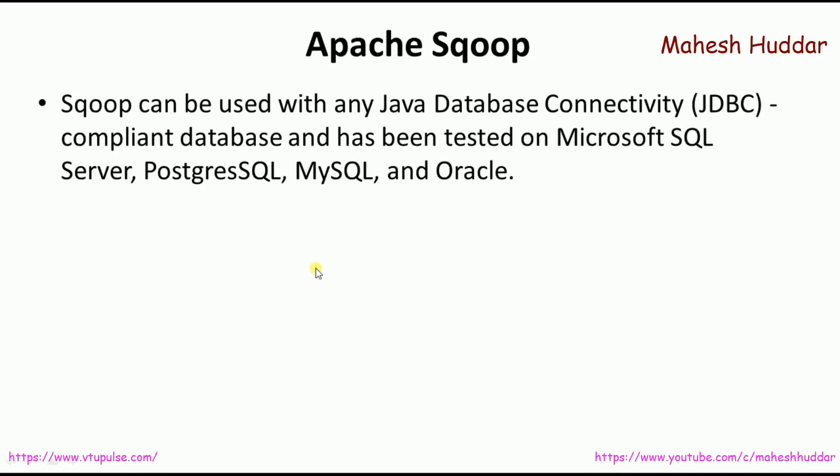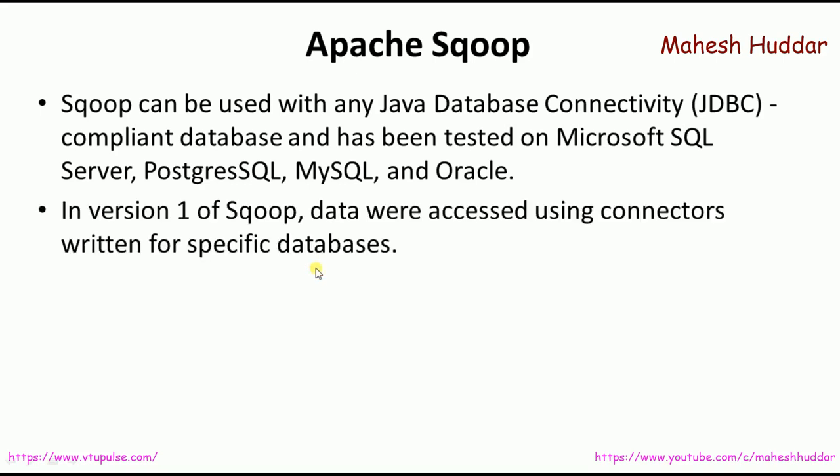There are two versions of Apache Sqoop. In version 1, data was accessed using connectors written for specific databases. For example, if one wants to import and export data to and from MySQL and HDFS, MySQL-related connectors should be used. Similarly, if one wants to import data from Oracle to HDFS and from HDFS to Oracle, Oracle-related connectors should be used.